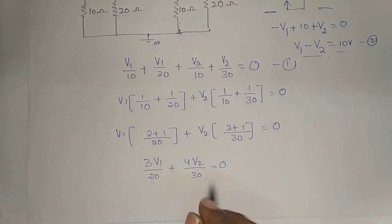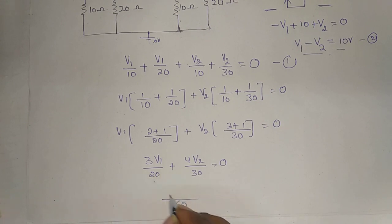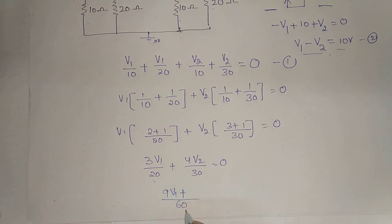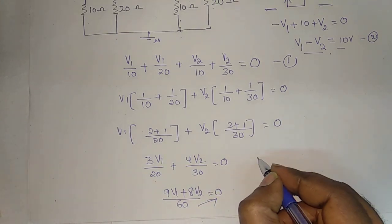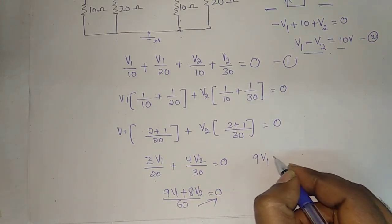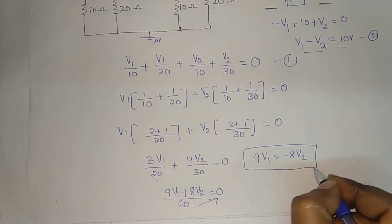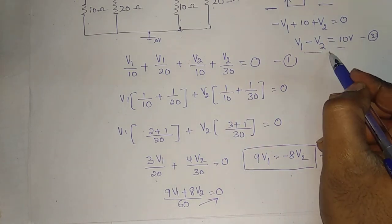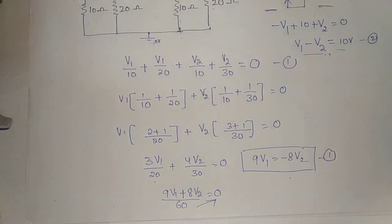Again, LCM is 60. So we get 9V1 plus 8V2 equal to 0, giving 9V1 equal to minus 8V2. This is the first equation. This is the second equation: V1 minus V2 equals 10, which we will now solve.